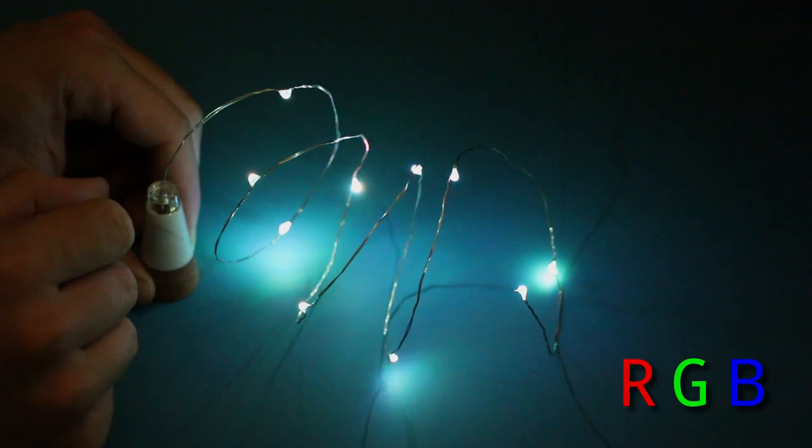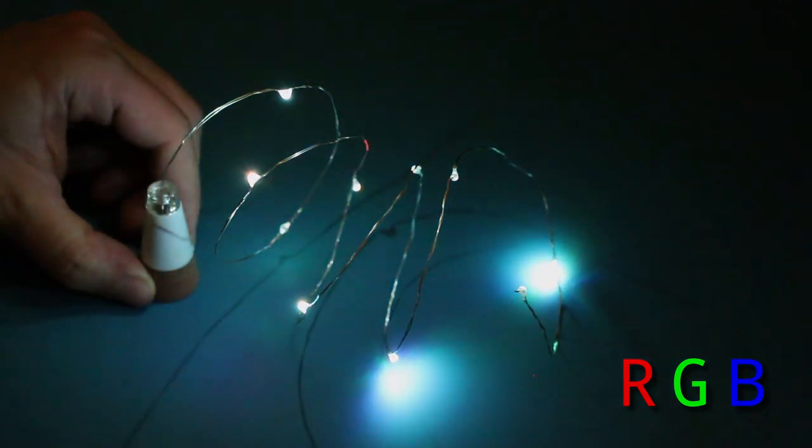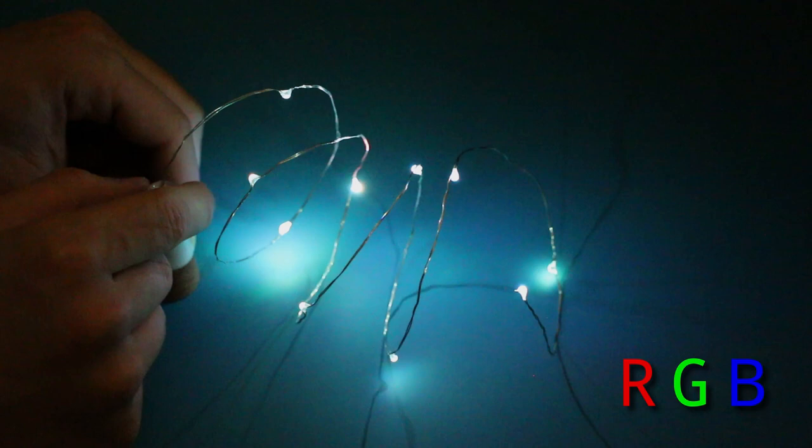And of course the camera is picking up the PWM that's put onto these LEDs so you might see some stripes and things on the screen.